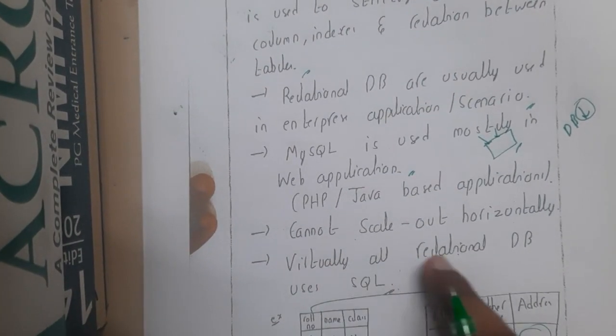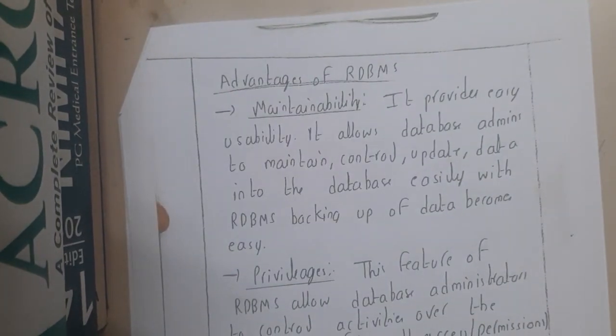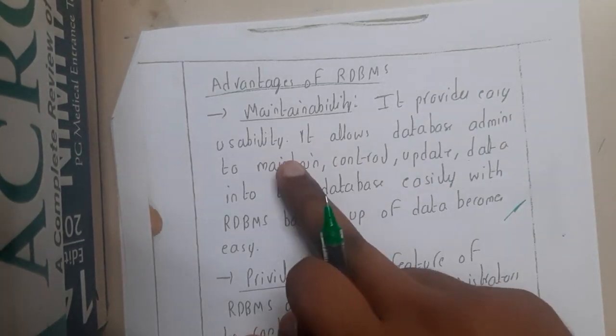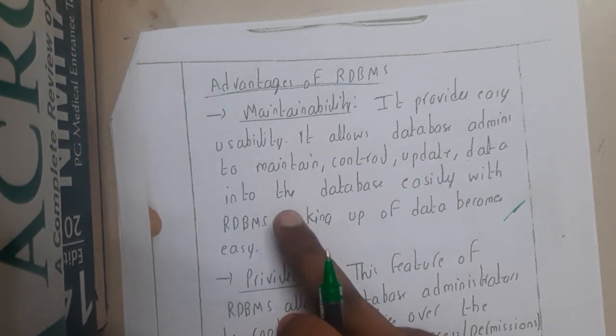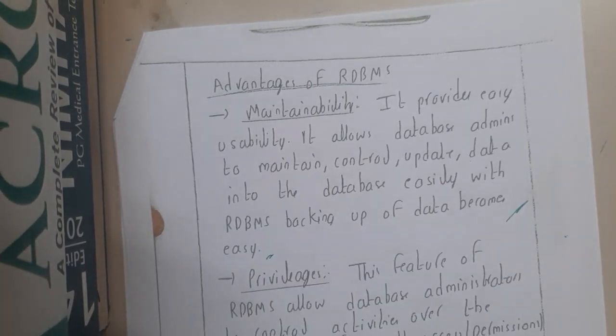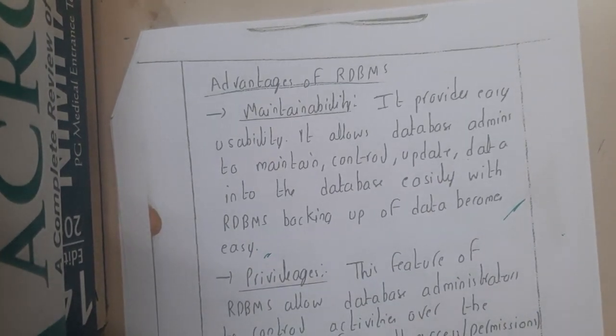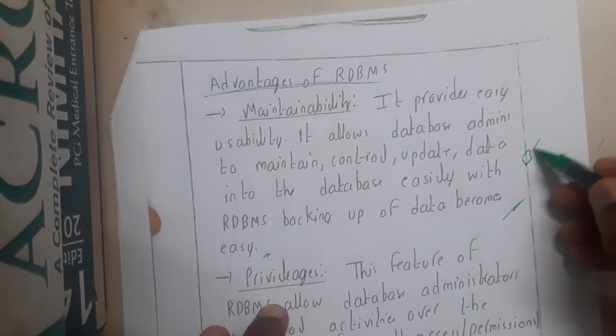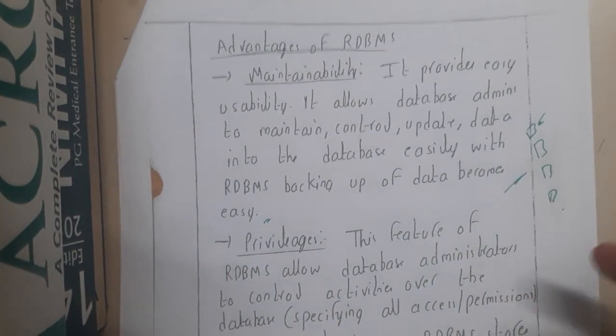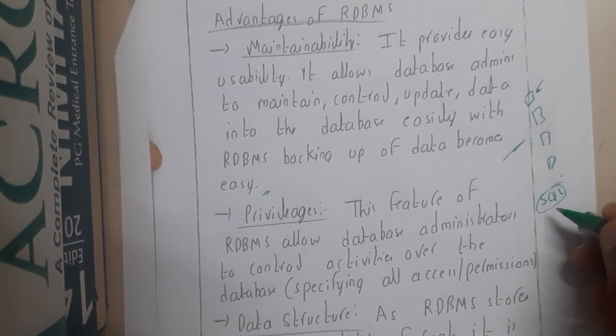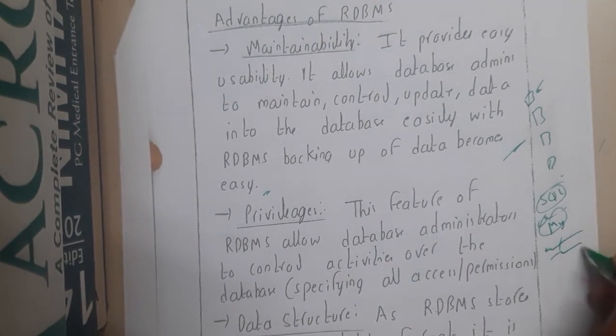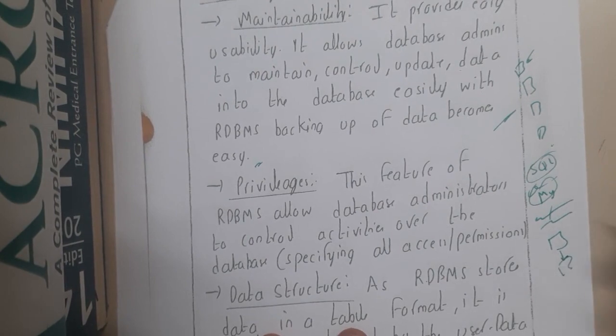A few advantages of RDBMS: the maintenance is really easy. It provides ease of usability. It allows a database administrator to maintain, control, and update data in the databases easily. With RDBMS, backing up of data became easy. The maintenance, any kind of admin things—if he wants to update some primary key, if he wants to change the flow of those tables, their relations, everything could be changed really easily. Even in MySQL or Oracle, you can even draw them directly. Instead of creating tables manually, you can draw them with a diagram. Based on that, the tables will be created and you can directly enter the value.